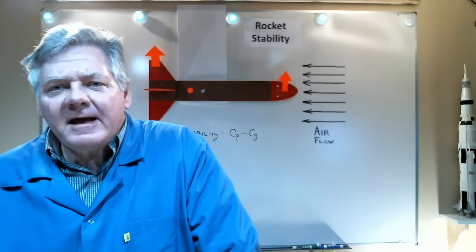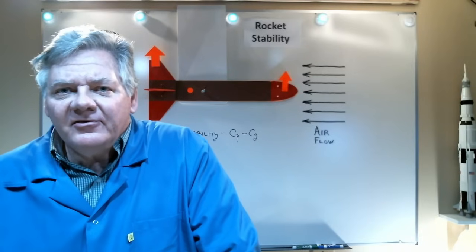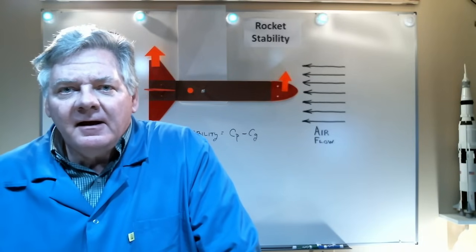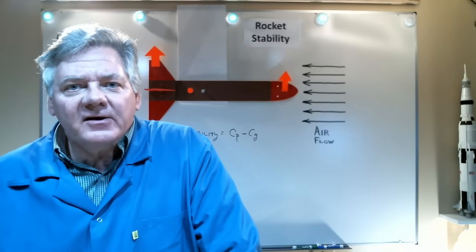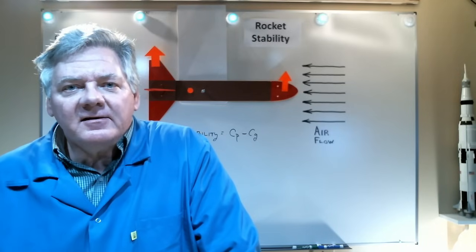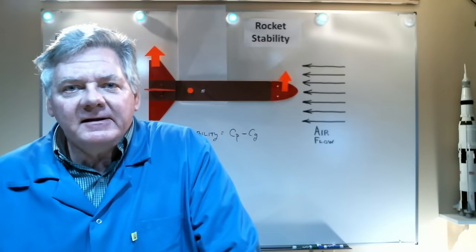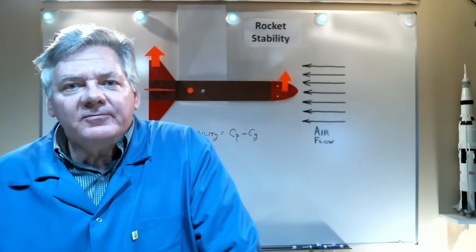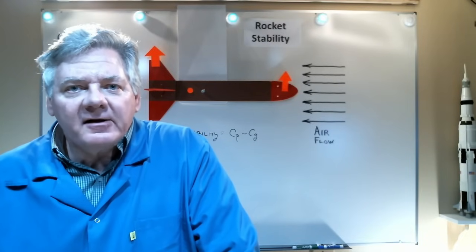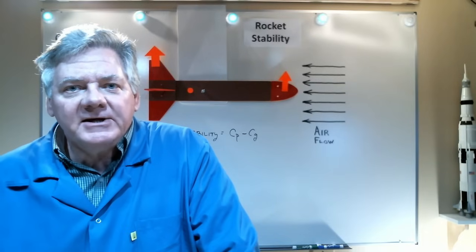The location of the center of pressure can be calculated theoretically, but you need to know aerodynamic properties of the nose cone and the fins. So it can be kind of cumbersome to do. However, luckily these days there's software that can do that for you. The software I like to use is called OpenRocket. It can be downloaded free from the internet. Let's go ahead and do some experiments to see how well the OpenRocket software calculates the center of pressure location.